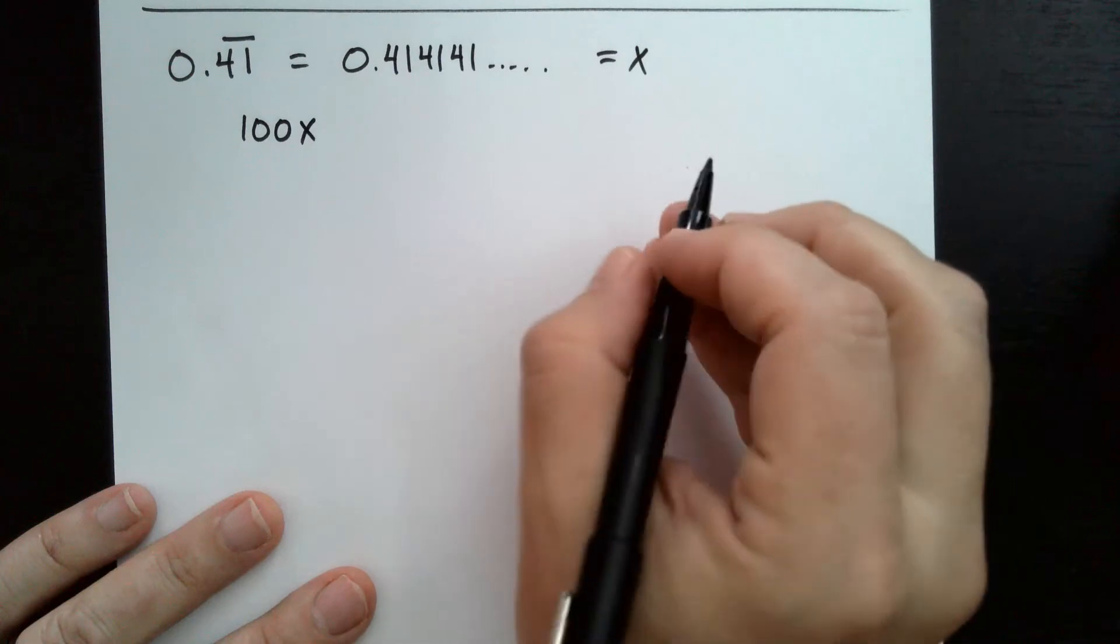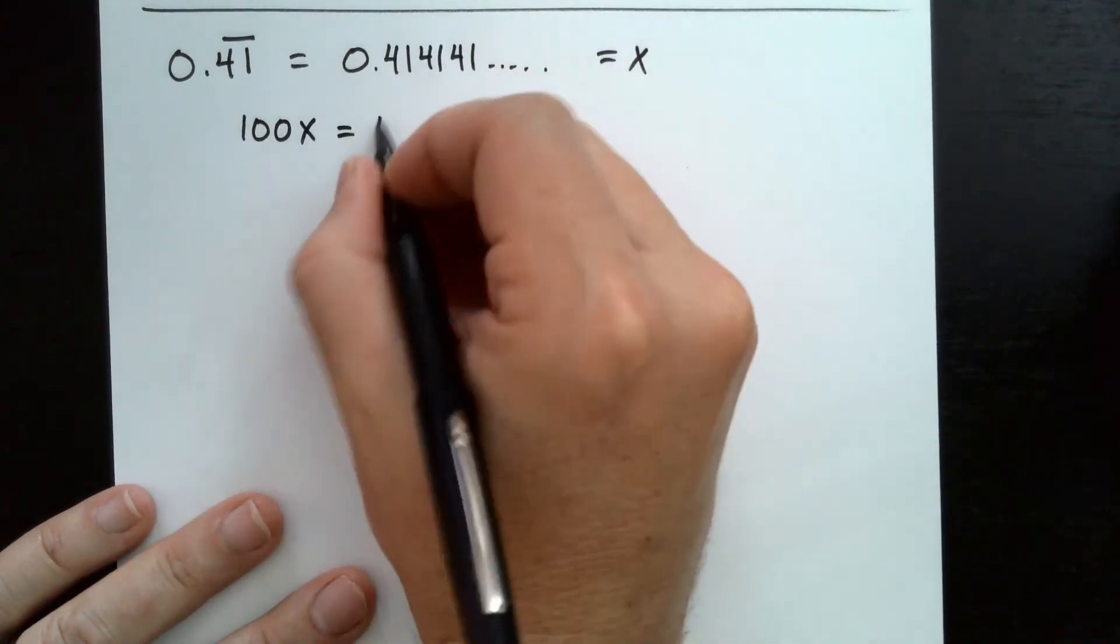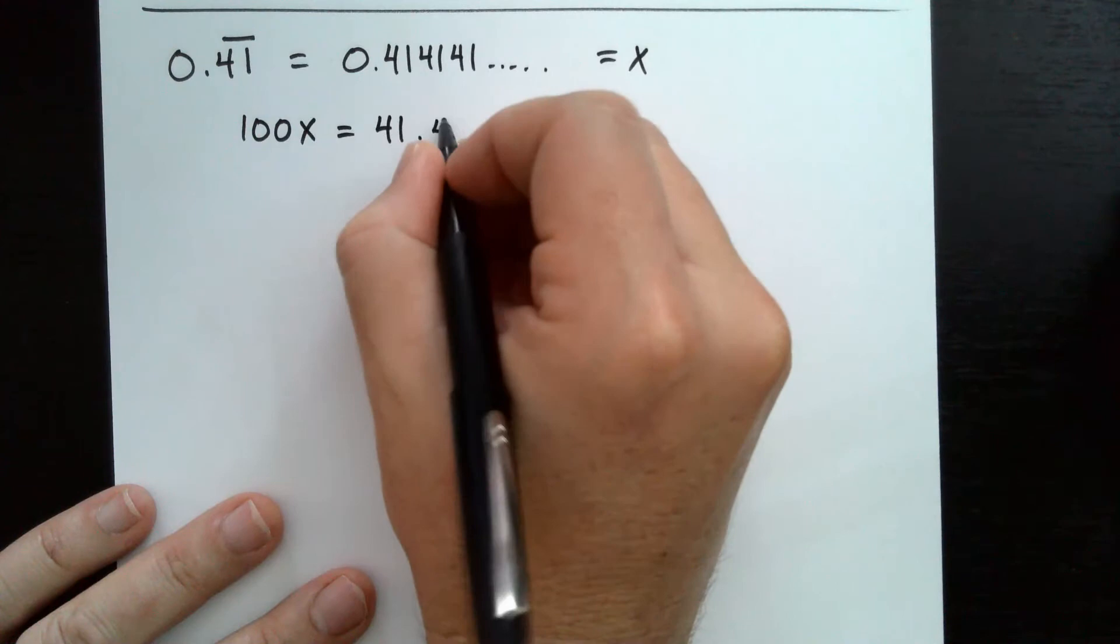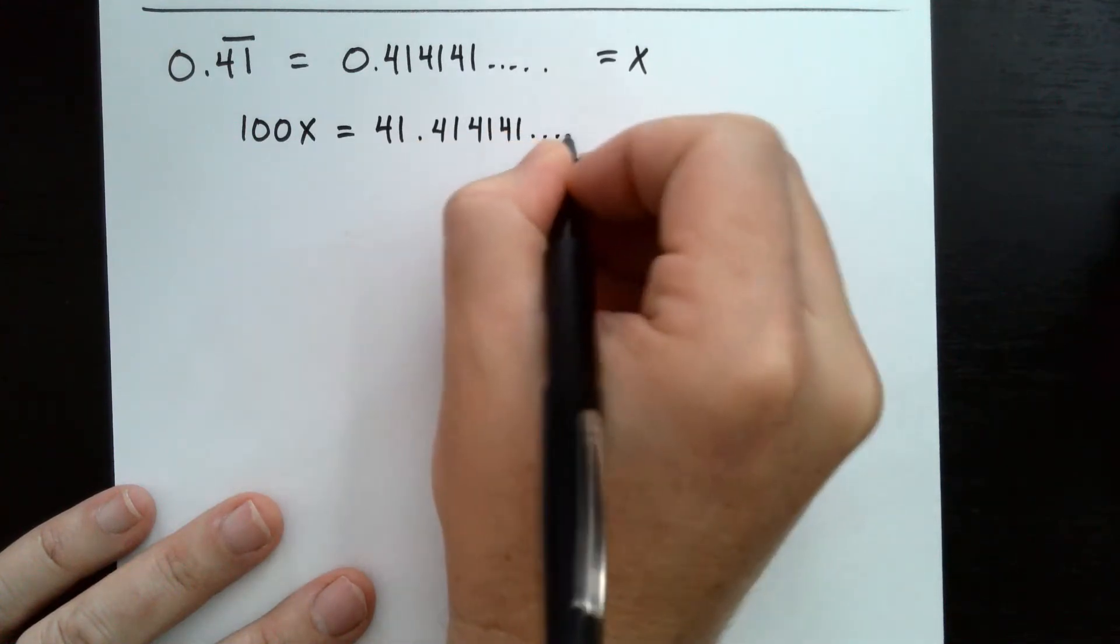Well, we would multiply by 100. So multiply 100, and that would move the decimal place twice, so we'd get 41.414141 repeating.